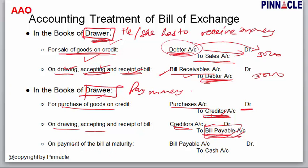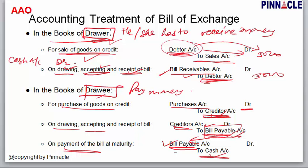On payment of the bill at maturity, in the drawee's books: Bill Payable Account is debited — the obligation is finished — and Cash Account is credited, because cash is going out of the business as the drawee makes payment. In the drawer's books: Cash Account is debited because cash comes in, and Bill Receivable Account is credited because the bill receivable asset is cancelled — the obligation to pay has been fulfilled.